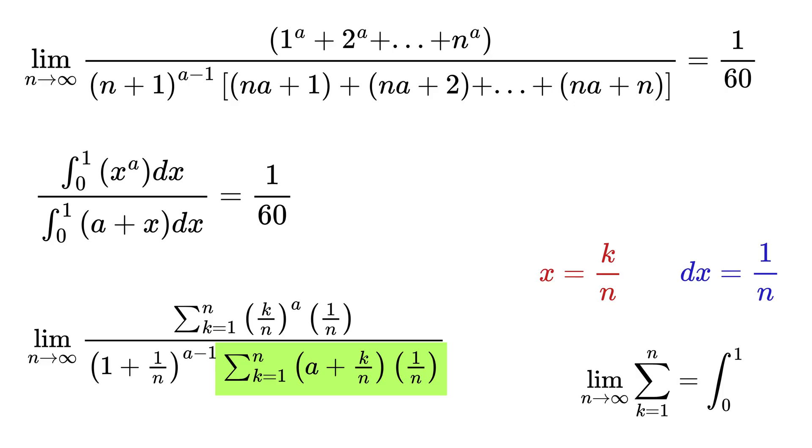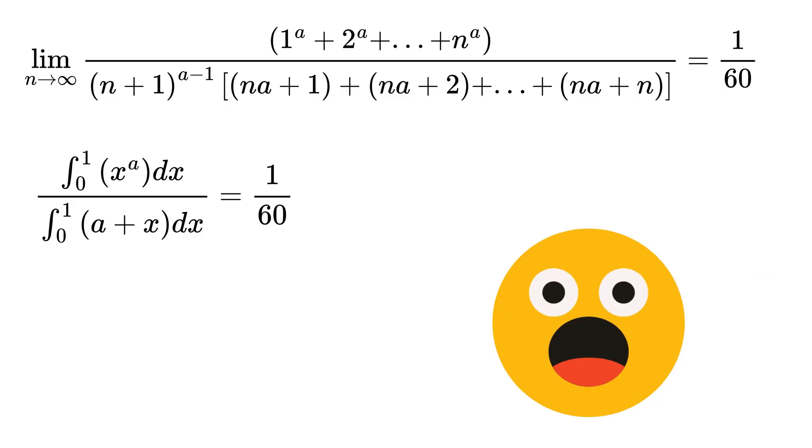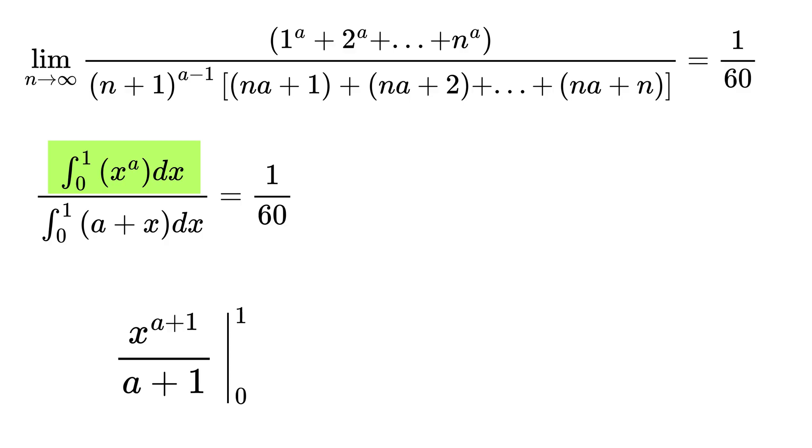Oh my god, that was amazing! Integral of this is x raised to a plus 1 over (a plus 1), and for x equals 0 to 1, this value will be simply 1 over (a plus 1). Then this integral will be ax plus x squared over 2 from 0 to 1, which simply gives us a plus half.